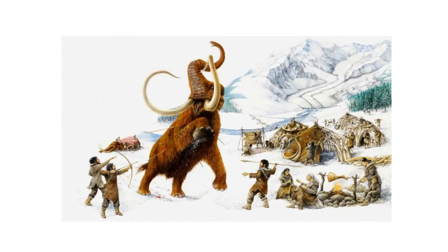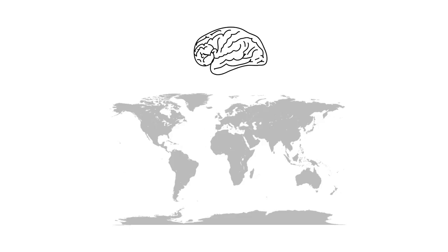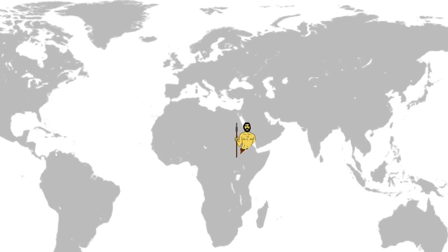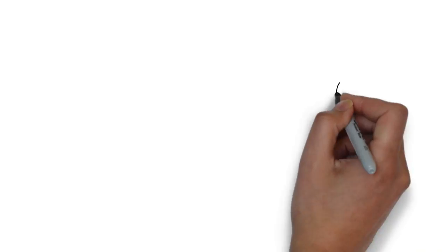Such advantages meant that Homo sapiens could find food and resources even in the harshest of environments. This revolution in brainpower allowed modern humans to venture into the most remote corners of the globe. Starting in Africa, they spread out and colonized Europe, Asia, America, and even Australia.